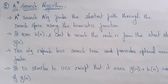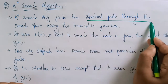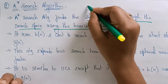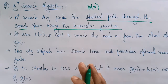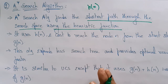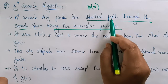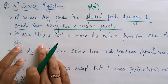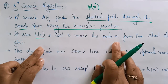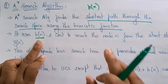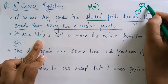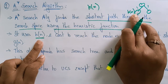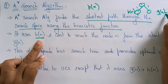The A star search algorithm finds the shortest path through the search space using the heuristic function. In the best first search we are using just the heuristic value, but here we are using two values to find the path — h(n), the heuristic function, and g(n), the cost to reach that node. Not only the heuristic value; we need to find the path cost as well.